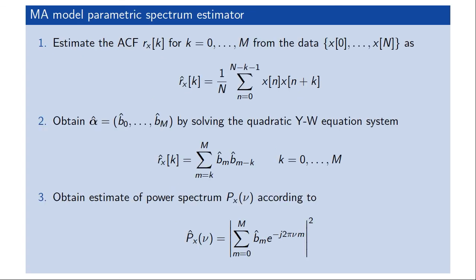The moving average model parametric spectrum estimation would first obtain an estimate of the autocorrelation rx of k from the data, for instance using the same estimator used for the periodogram. Then we obtain estimates of the parameters b0 to bm by solving the Yule-Walker equations, inserting our estimate for the autocorrelation function. Then, as before, we obtain the power spectrum of the output process by computing the squared magnitude. Since we don't have any feedback parts, we only have the numerator of the transfer function, so that expression simplifies as well.